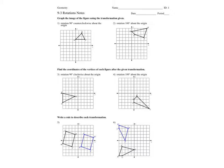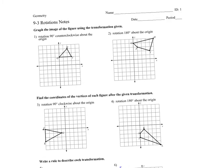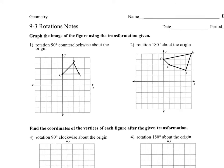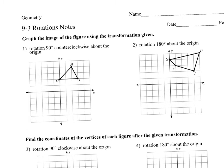Okay, rotations. What are rotations? That's when you turn a figure. So reflection was when we flipped it, translation was when we slid it, moved it up and down, left and right. Rotation is when we turn it.